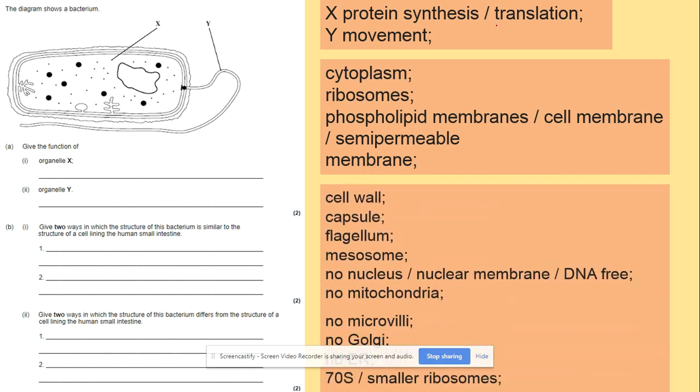And give two ways in which structure will then differ. So again same answers as before. Cell wall, capsule, flagellum, mesosomes, no nucleus or no Golgi body, smaller ribosomes.